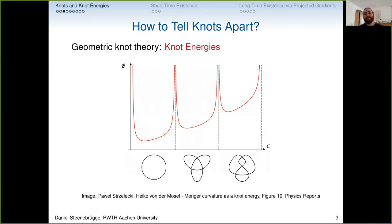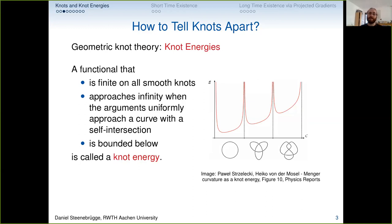In geometric knot theory, which is what we are doing, we have knot energies. Knot energies are a way of assigning some energy number to a given configuration of a knot. We divide our different knot types by infinitely high energy walls, so you can't change from one knot type to another — that is, by passing strands through each other — without the energy exploding to infinity. More precisely, a knot energy is a functional that is finite on all smooth knots and approaches infinity when the arguments uniformly approach a curve with self-intersection.